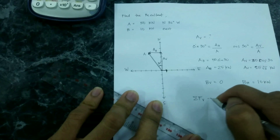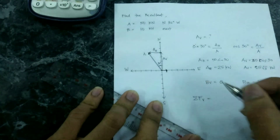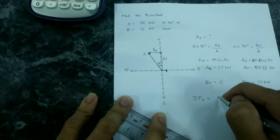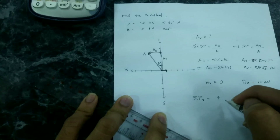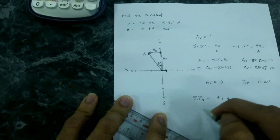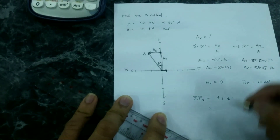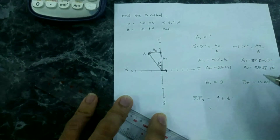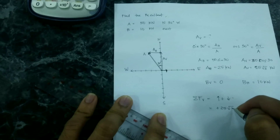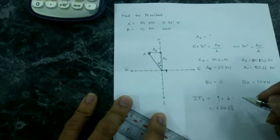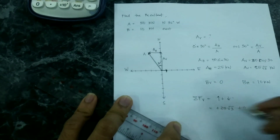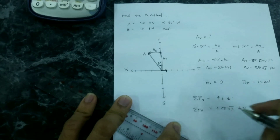The next step is to find the summation of the vertical forces. We consider forces going up to be positive and forces going down to be negative. The summation of vertical forces equals the vertical component of A, which is going up, so that is positive 25√3. Force B has no vertical component, so that is plus 0. Summation of vertical forces = 25√3 kN.